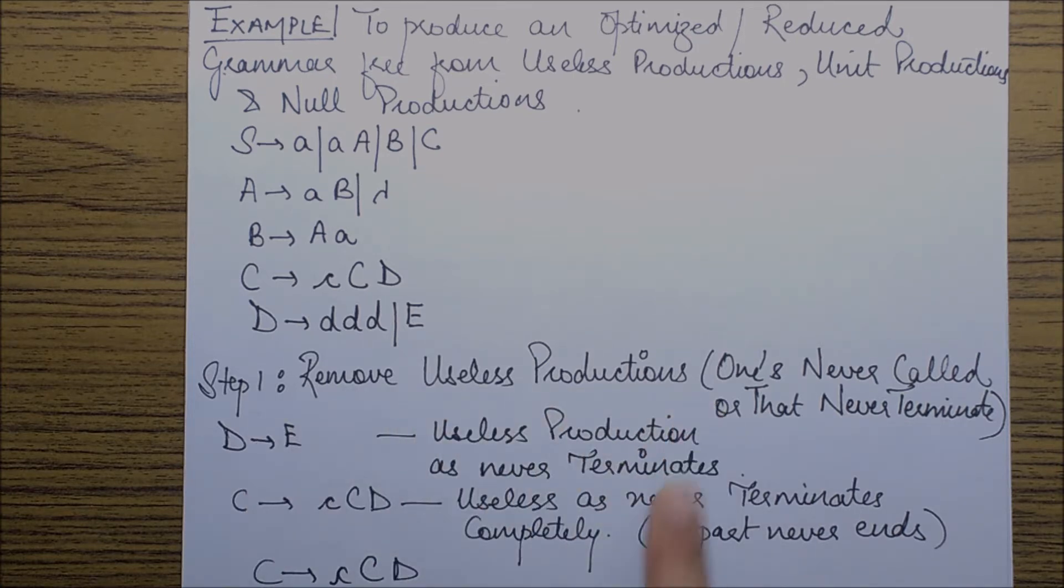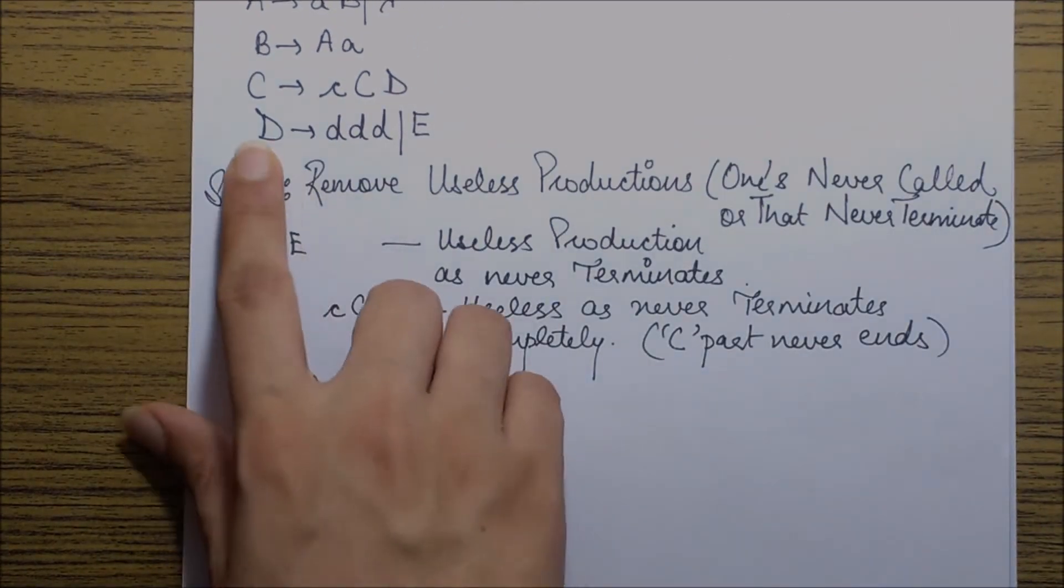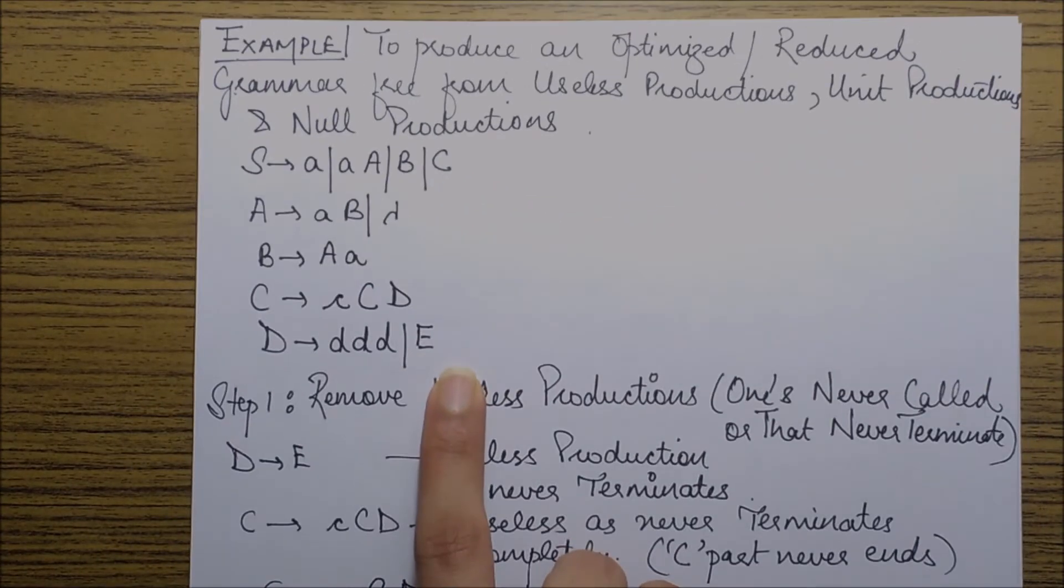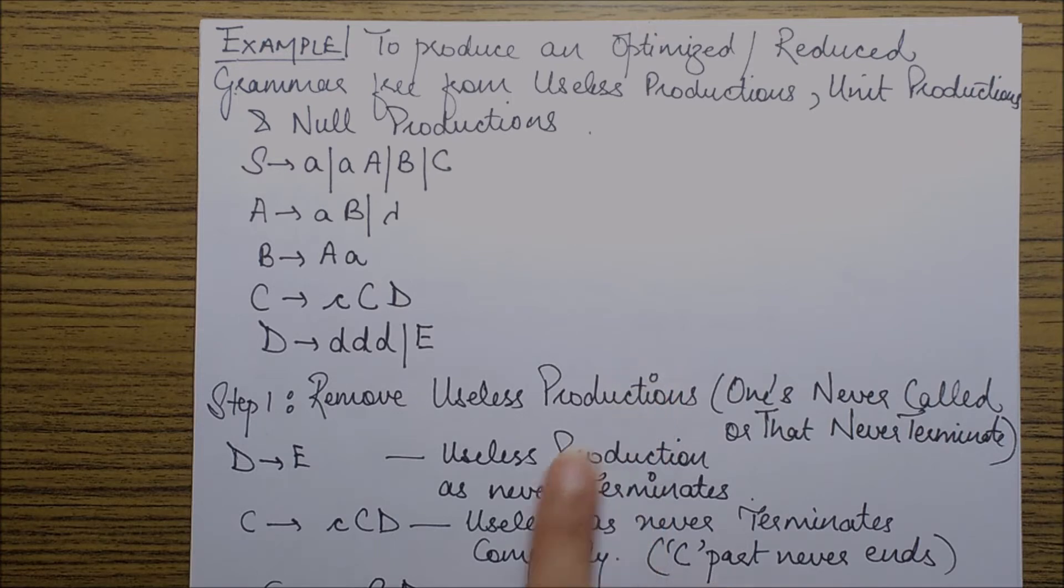So step one was to remove the useless productions. If I see D goes to E, this is a production which would never terminate because E does not go to any terminal symbol. Therefore, D goes to E is a useless production.